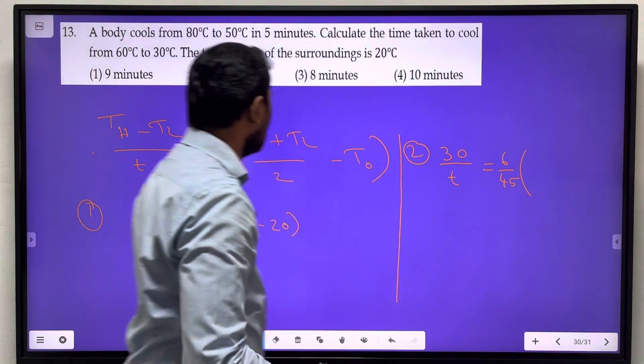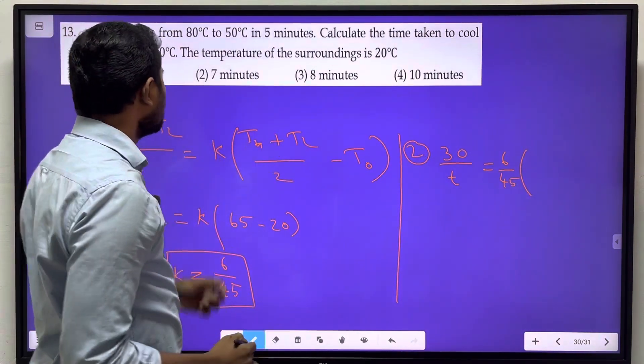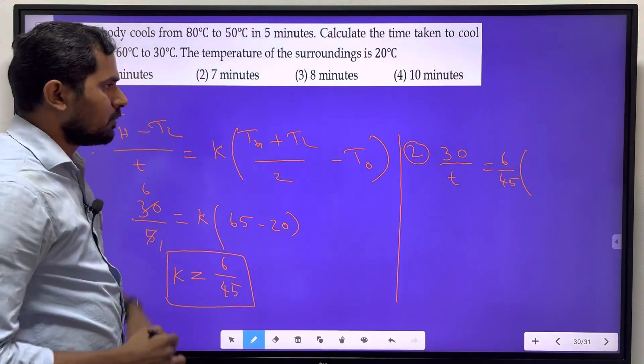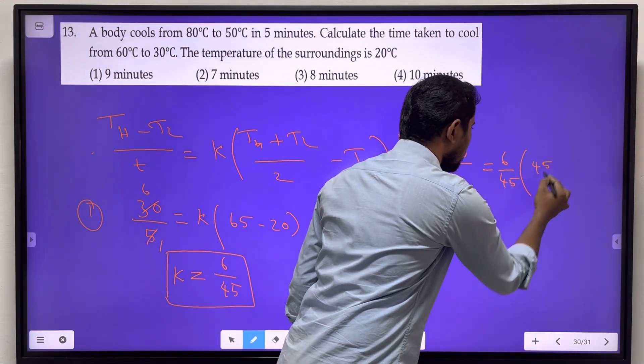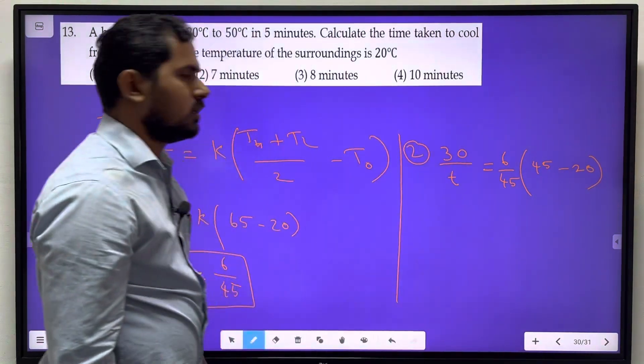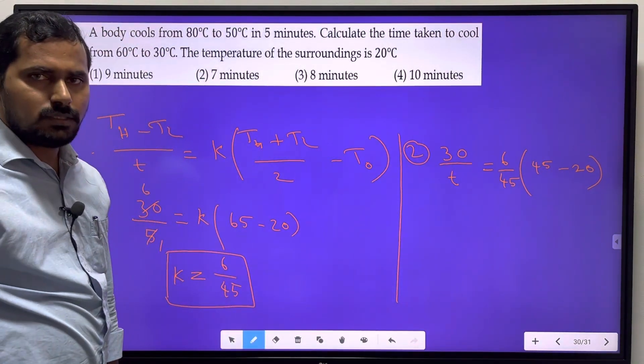Then (TH + TL)/2 - T0 equals (60 + 30)/2 - 20, which is 45 minus 20, giving us 25.